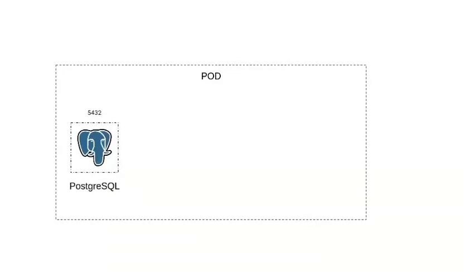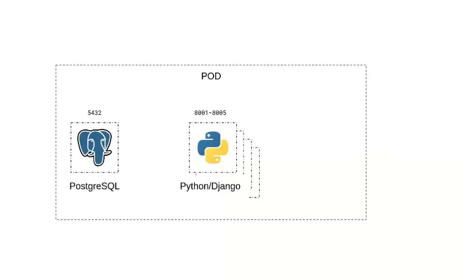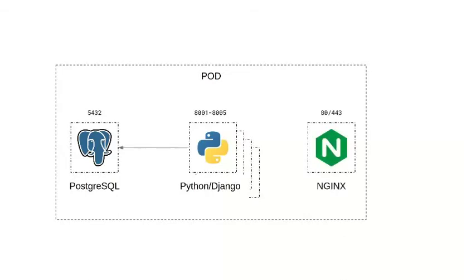Starting from the bottom of the stack, a database container is created. Then, one or a number of application containers are created. And finally, a web server. The application will connect to the database. The web server forwards requests to the applications, and users access the application via the web server.